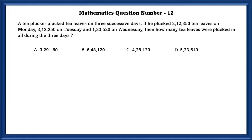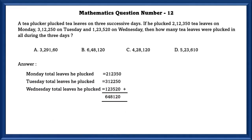Mathematics question number 12. A tea plucker plucked tea leaves on 3 successive days. He plucked a certain number of tea leaves on Monday, Tuesday, and Wednesday. To find how many tea leaves were plucked during all 3 days, we have to add all three days. Adding these, we get 6,48,120.